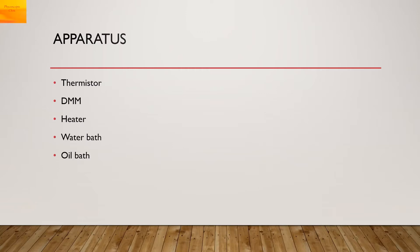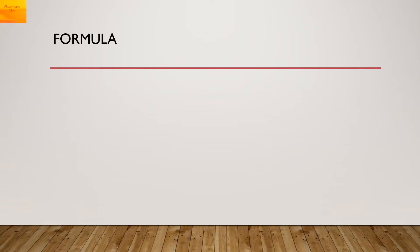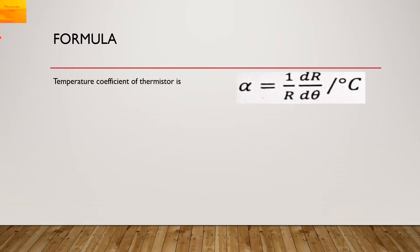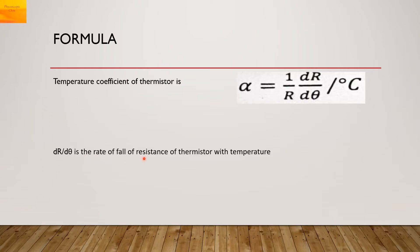The formula: the temperature coefficient of the thermistor is given as alpha equals 1/R multiplied by dR/dθ. The unit of temperature coefficient is per degree Celsius. dR/dθ is the rate of fall of resistance of the thermistor with temperature.